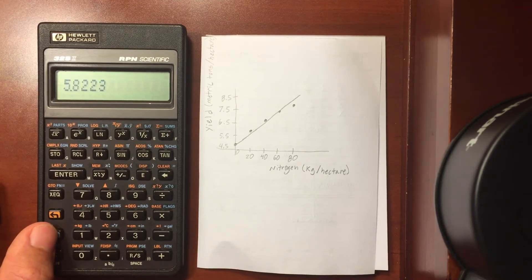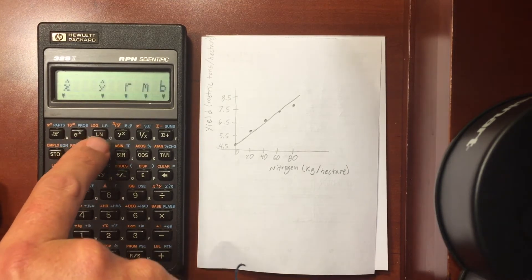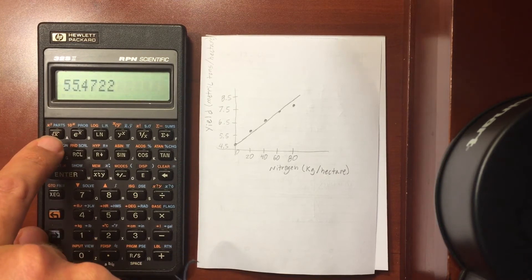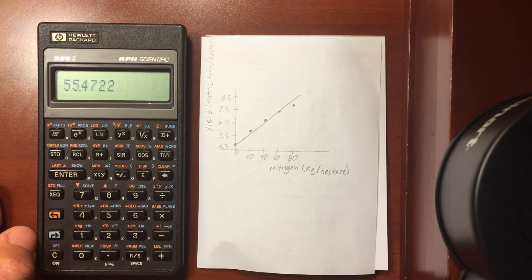And you can go the other way, too. So if I want a yield of 7 metric tons, I can enter in 7. Go to linear regression and find out what x value, how much nitrogen, should I put in to achieve that. So 55 kilograms of nitrogen.